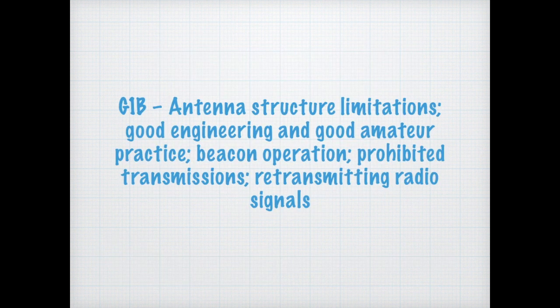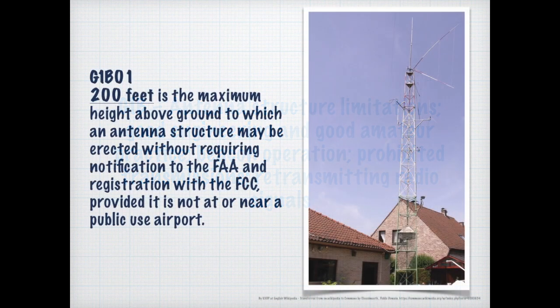Now we're going to talk about antenna structures — some of the limitations, good engineering, and good practices. If your zoning permits and you're not in an area with a building association, you're allowed to have an antenna up to 200 feet without registering it with the FAA. However, if you're near an airport, that may not be the case, so before erecting such a structure you might want to investigate.